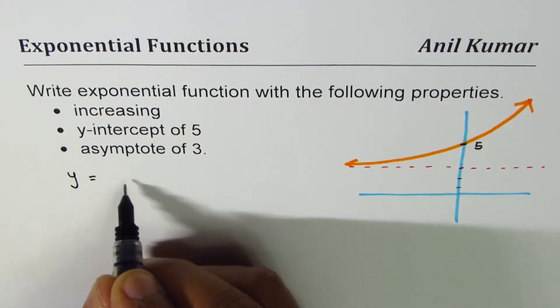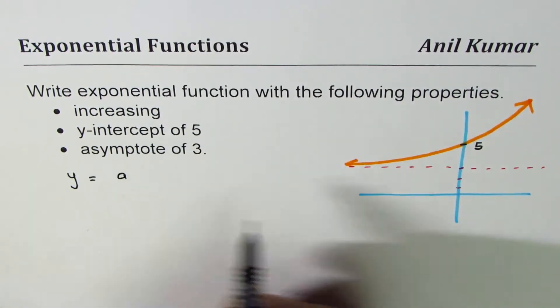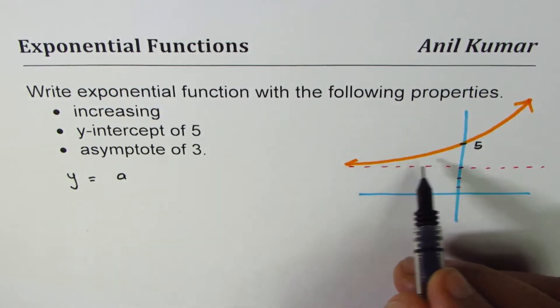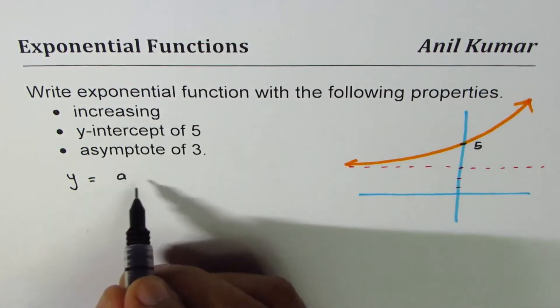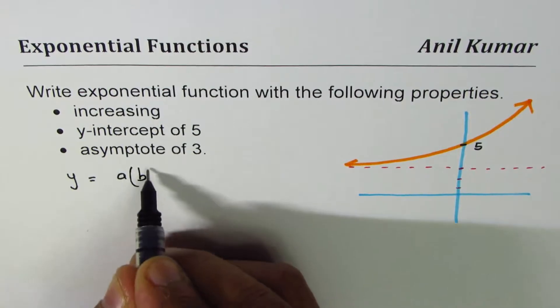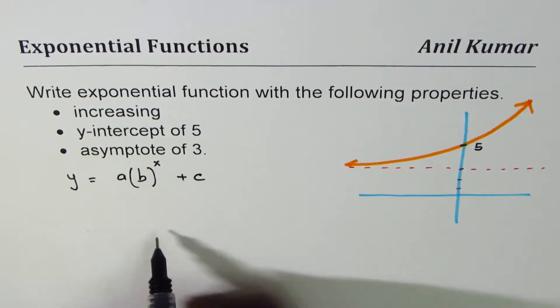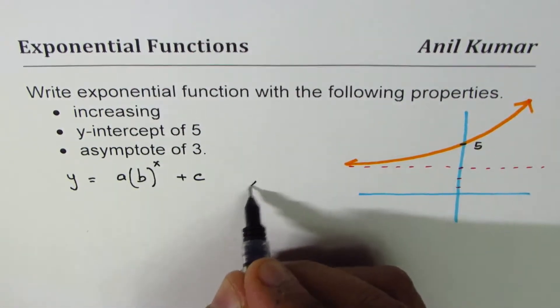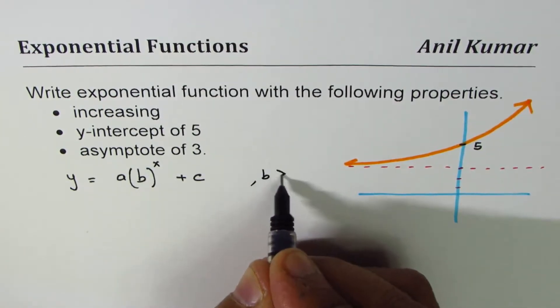y equals a times b to the power of x plus c. For increasing functions, b is greater than 1.